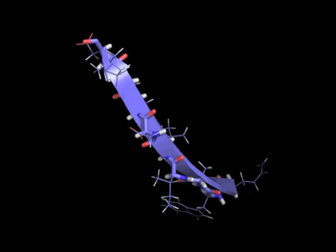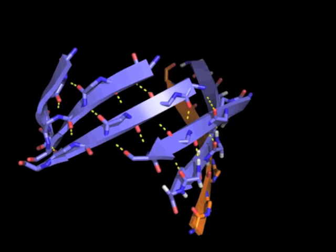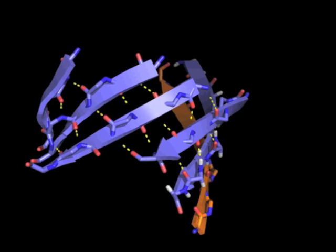When we put this single strand in the context of a parallel beta sheet structure, we can highlight the hydrogen bonds stabilizing the sheet. These appear as dashed lines.